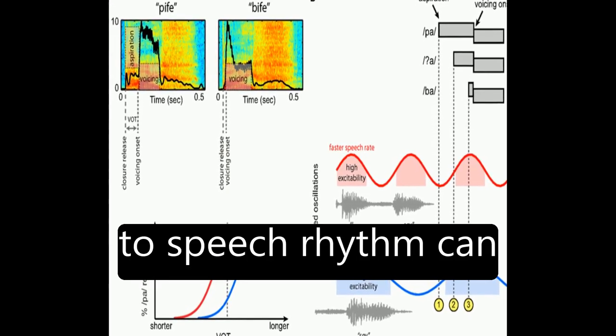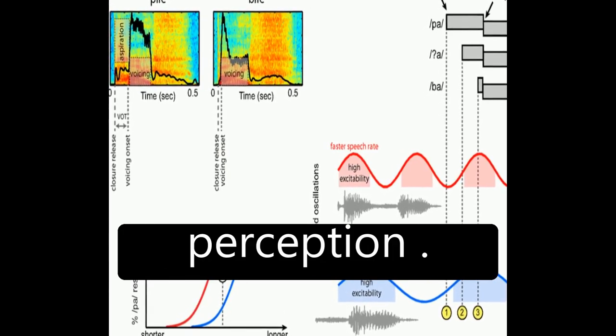This neural entrainment to speech rhythm can explain effects of speech rate on word and segment perception.